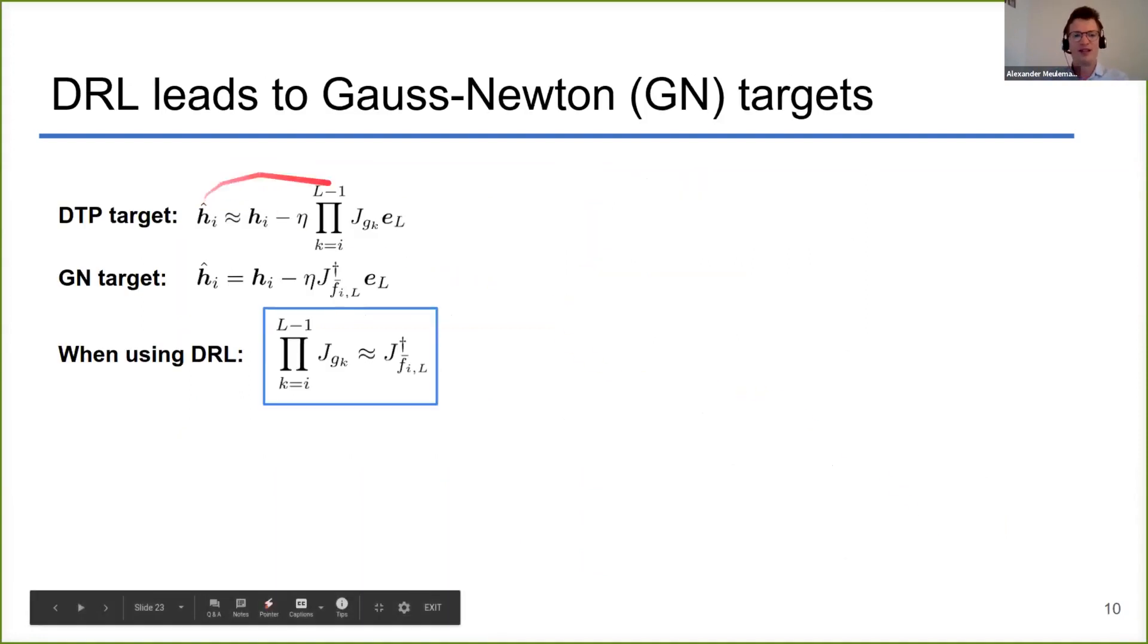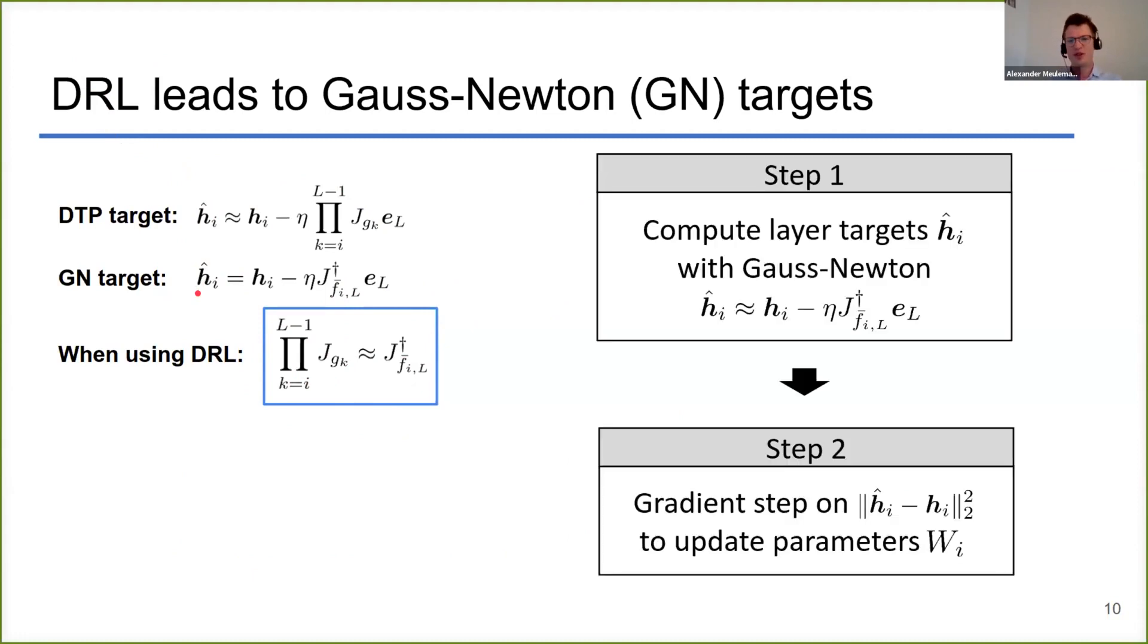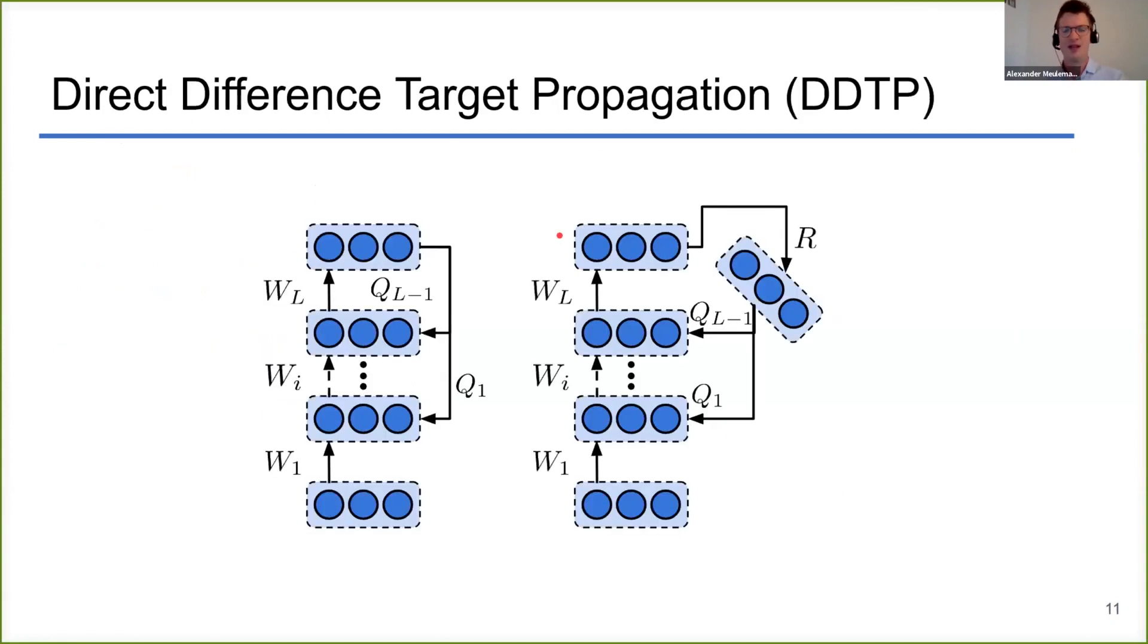If we then take a closer look again, we show it theoretically in our paper that if you train your feedback parameters by minimizing this difference reconstruction loss, you actually get this approximate equality. So then you get that the difference target propagation targets, now trained with the difference reconstruction loss, are approximately equal to Gauss-Newton targets. So then this hybrid optimization view that we established for target propagation with exact inverses now also holds for difference target propagation with approximate inverses.